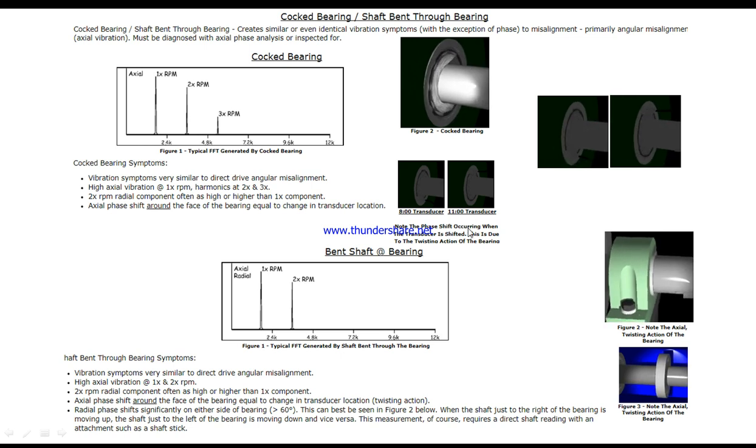This shift is due to the twisting action of the bearing. We have readings at 8 degrees and here at 11 degrees, so we can see how it's cocked and not rotating in a proper way. The symptoms vary similar to angular misalignment.